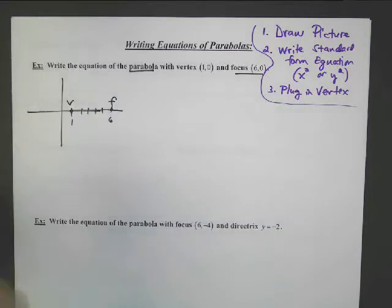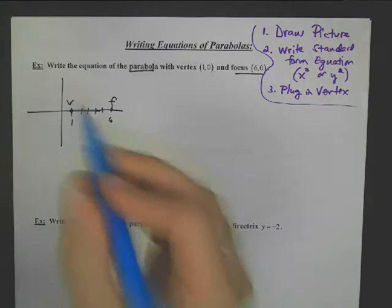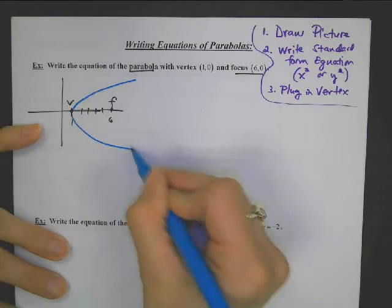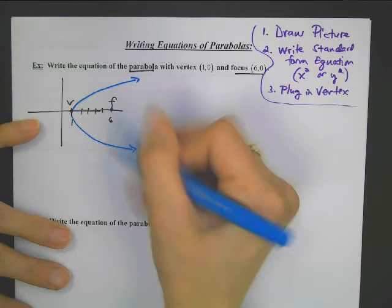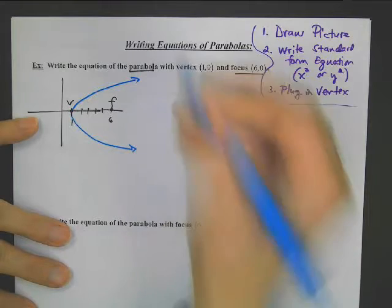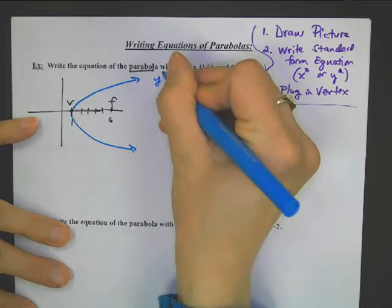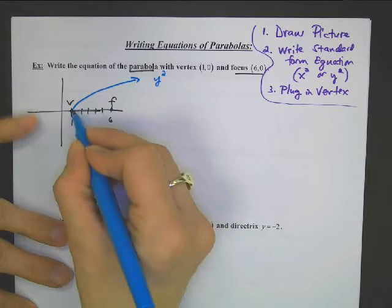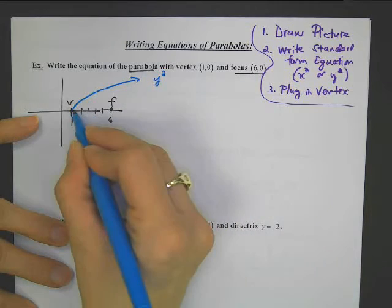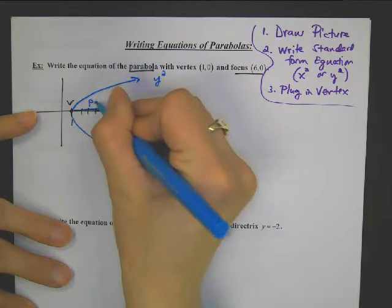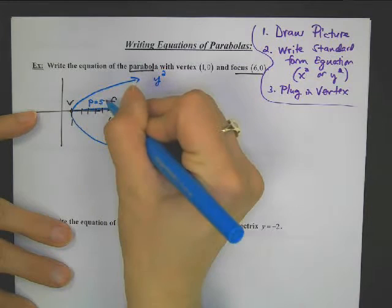Okay, that is the focus. Well, now I know a lot. Now I know that the parabola has to surround the focus. So is this going to be an x squared or y squared? This is definitely going to be a y squared equation. Looking at this, from vertex to focus, that is p. The p is 5.